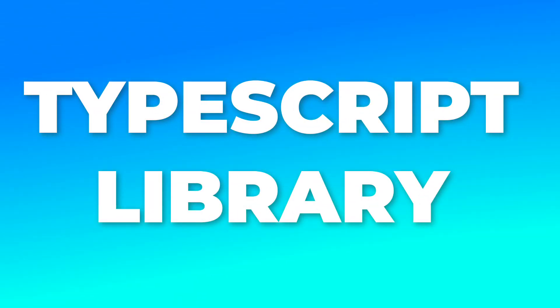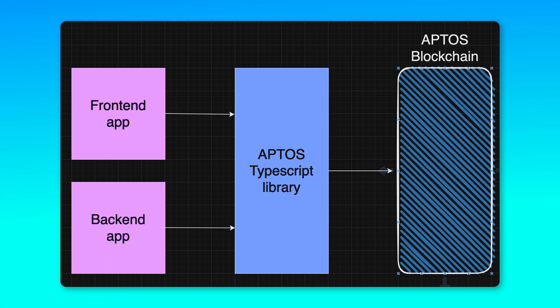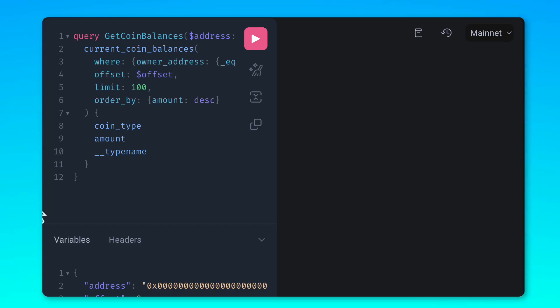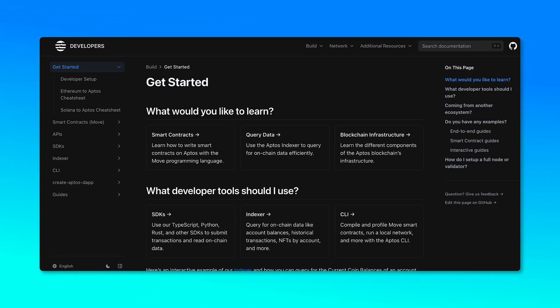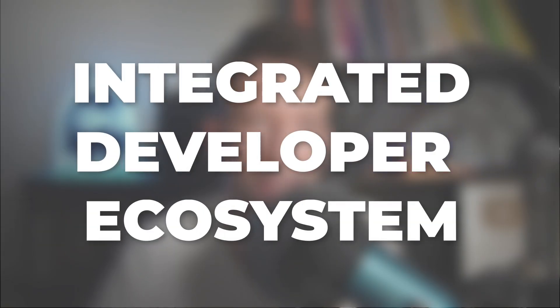Aptos also offers an amazing TypeScript library to interact with the Aptos blockchain. It's very easy to understand and you can use it to easily build backend or frontend applications. Aptos also has a free GraphQL indexer, meaning that it's very easy to read complex data on the blockchain. This is much more simple and flexible compared to directly reading the data from the blockchain, and everything is very well documented for developers. The Aptos ecosystem is much more integrated than other blockchains — the same entity created the entire toolchain and it feels way easier to piece everything together.